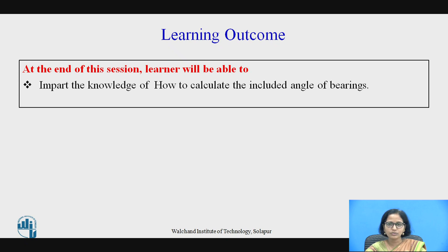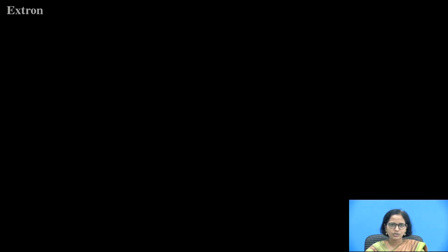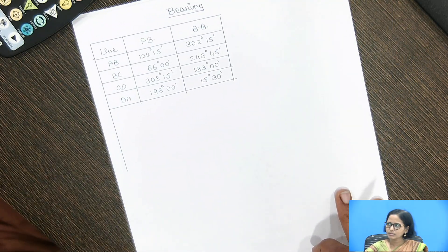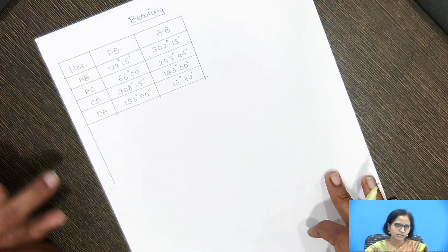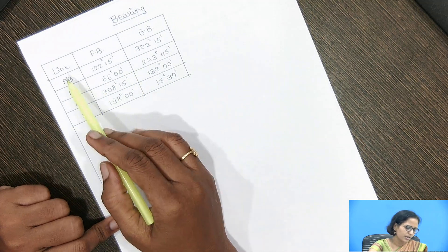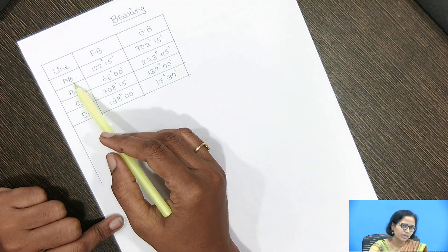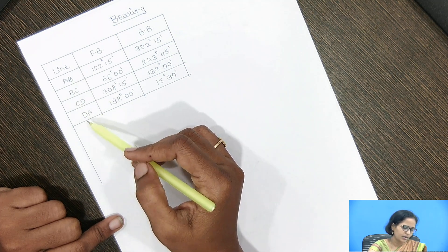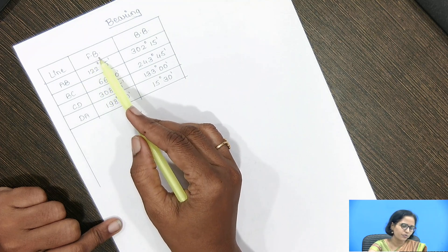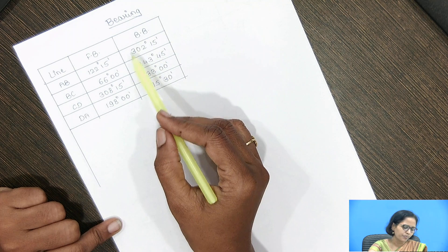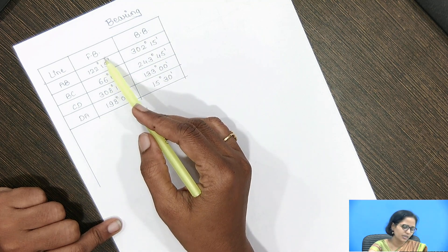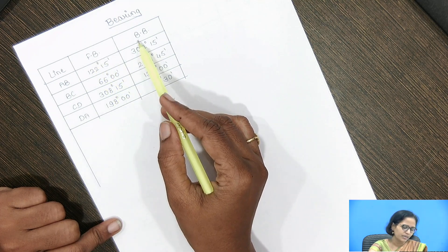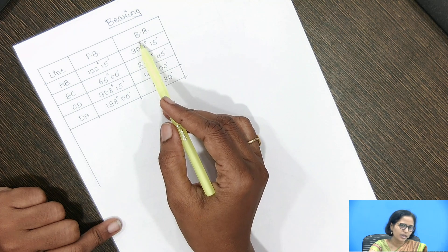I will explain how the traverse has to be drawn using the bearings. These are the bearings given — the survey lines AB, BC, CD, and DE. FB is the fore bearing and BB is the back bearing. The fore bearing refers to bearings measured in the forward direction, whereas the back bearing refers to bearings measured in the backward direction.